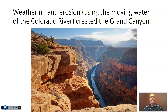Weathering and erosion and deposition are things that shape Earth's surface. If we look at some very popular national parks — in this example we can see the Colorado River down in the Grand Canyon and the steep sides of the canyon. These steep sides were actually carved by the river, by the moving water, and the sediment that resulted was then carried away by the Colorado River. Weathering and erosion are very powerful agents when it comes to shaping landforms and the surface of the Earth.